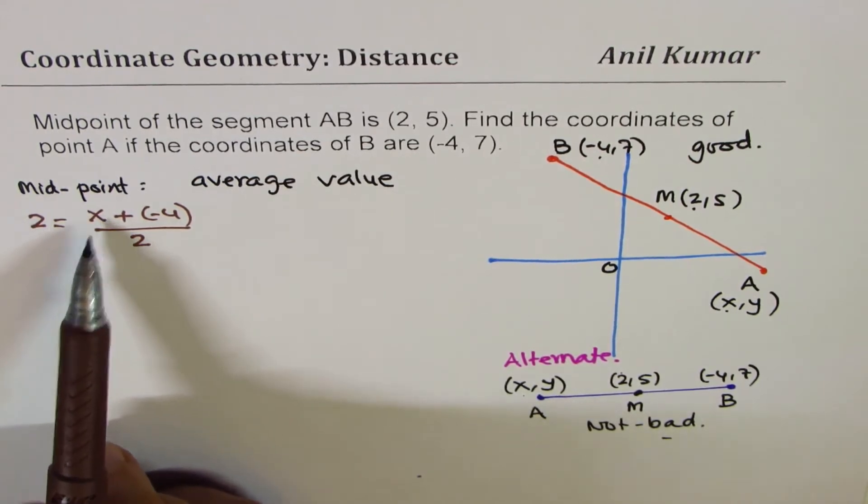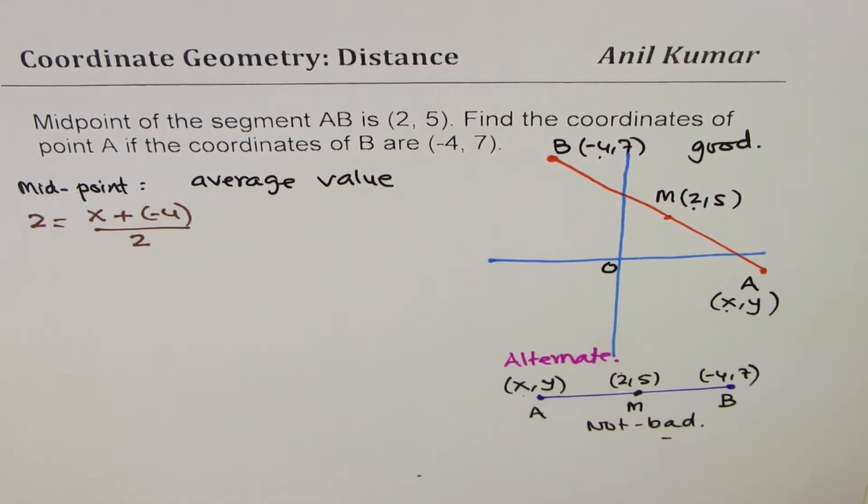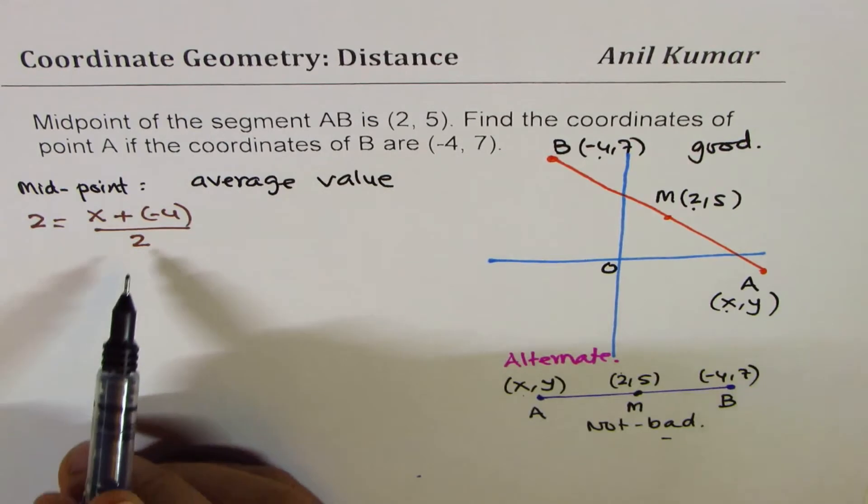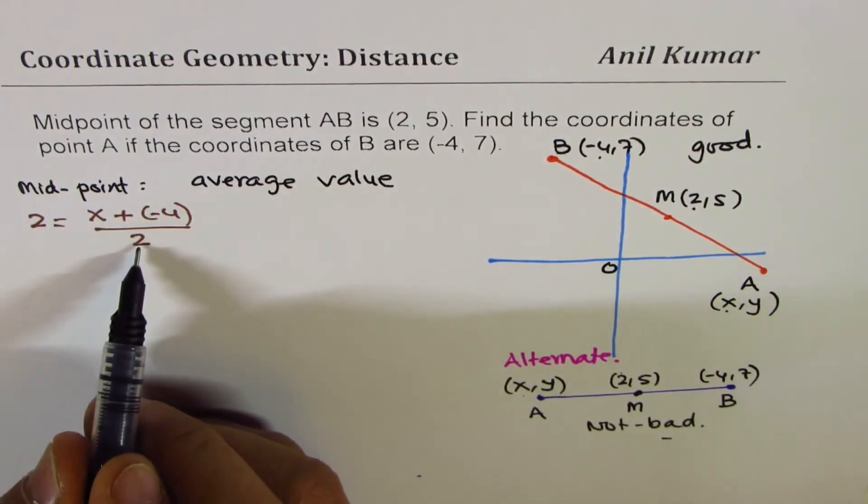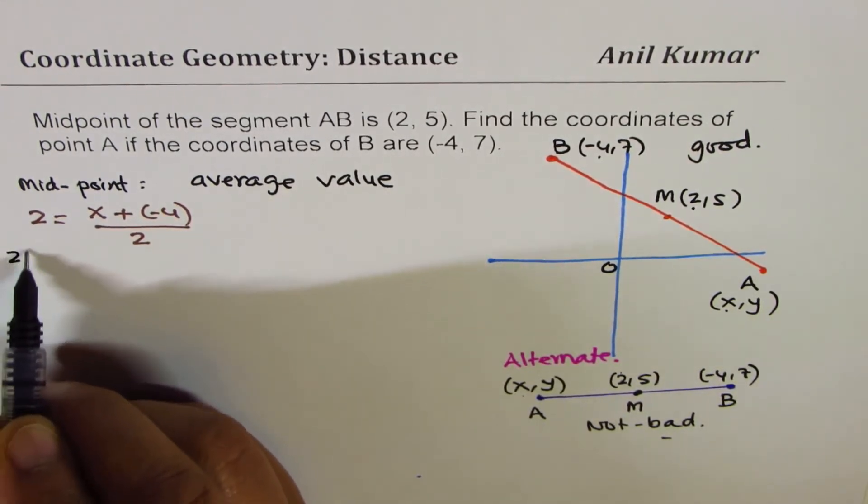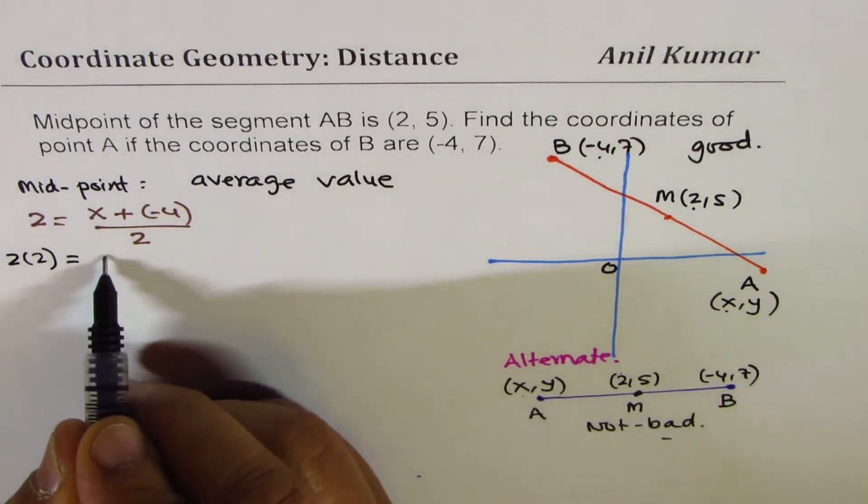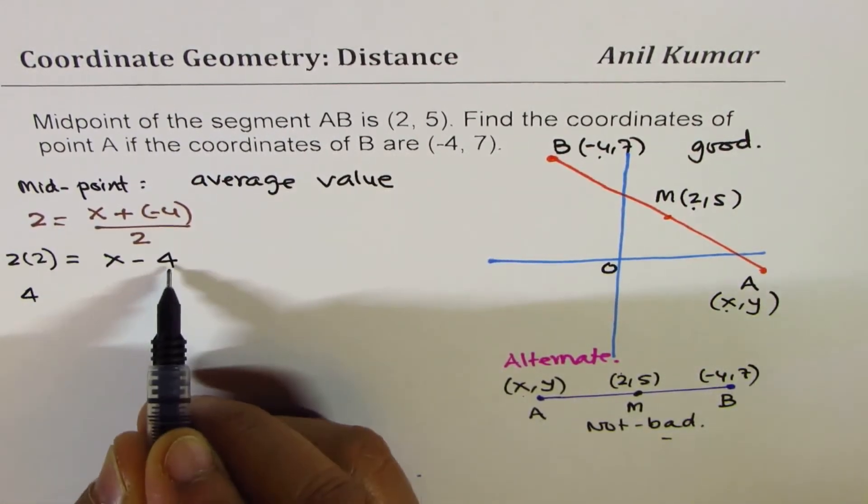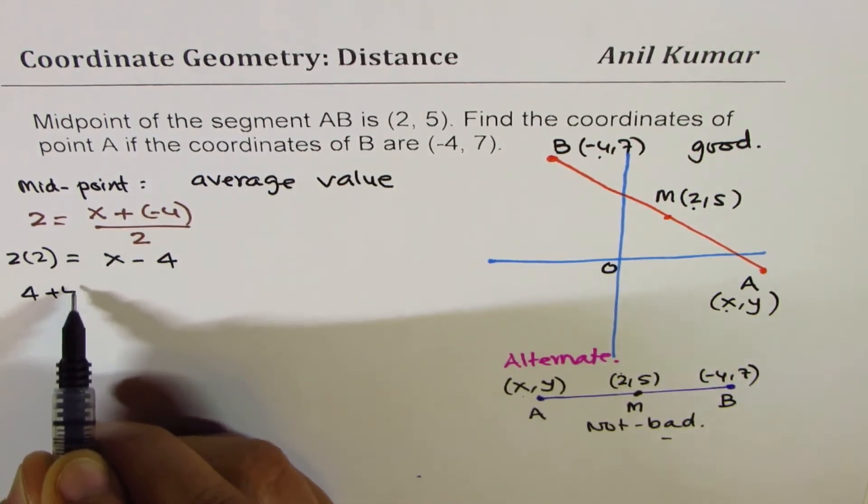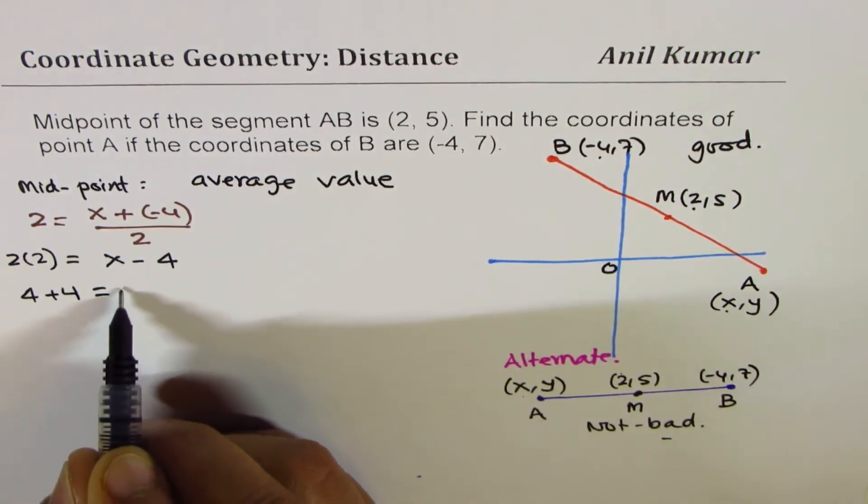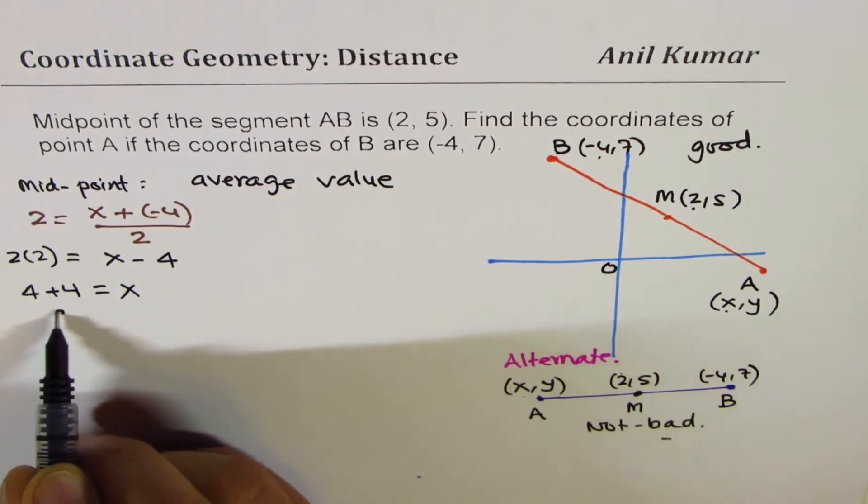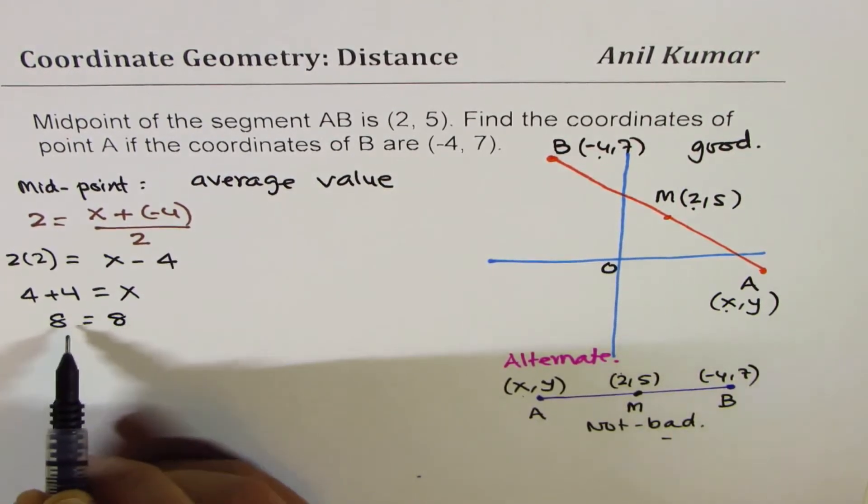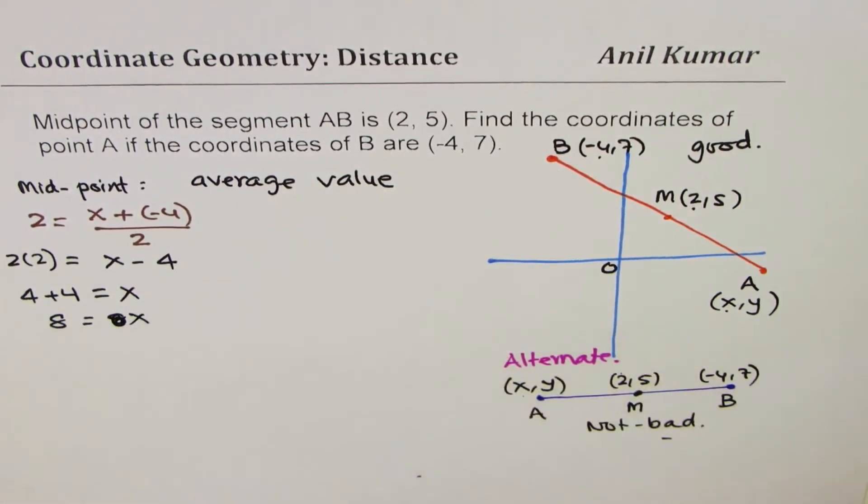Now once you write that, you can find what x is. Just cross multiply to solve for x. 2 times 2, we'll do 2 times 2, cross multiply, and we have x - 4. So that is 4. And bringing this -4 to this side becomes +4 equals to x, and we get x value as 8. x value is 8.